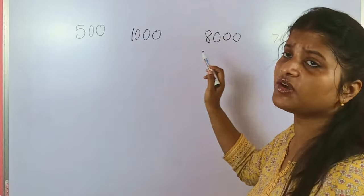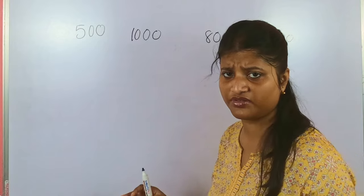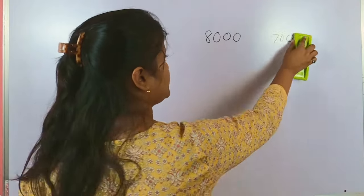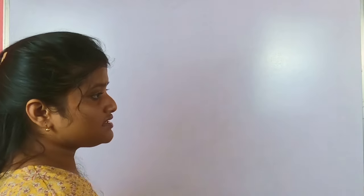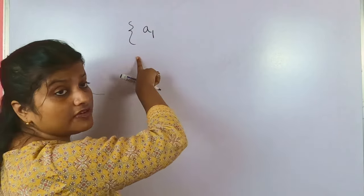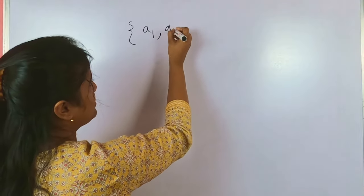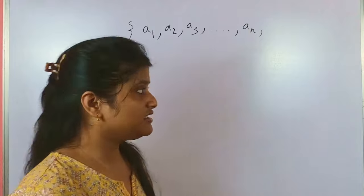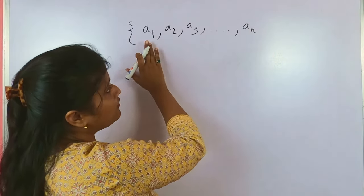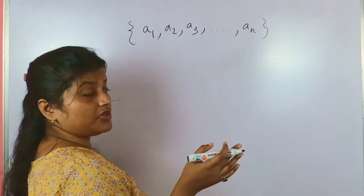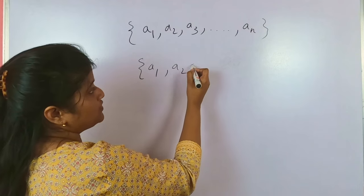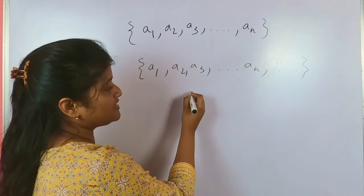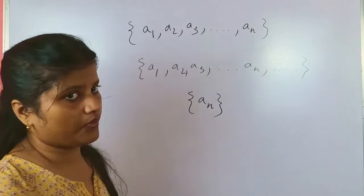A sequence doesn't have to have a common difference or common ratio — it can involve addition, division, subtraction. Any collection of numbers done in order is called a sequence. A sequence is noted as {a1, a2, a3, ..., an}. If there are finite elements, it goes from a1 to an. If there are infinite terms, it goes a1, a2, a3, dot dot dot. This is the whole notation form.